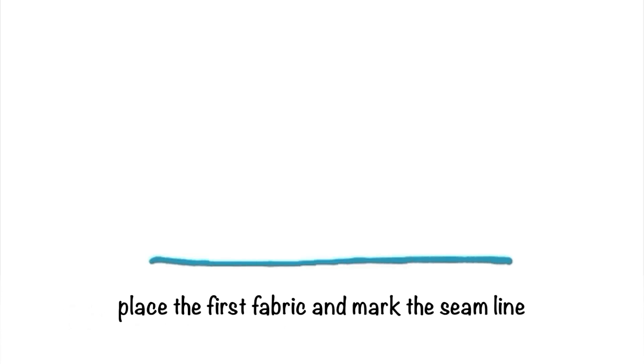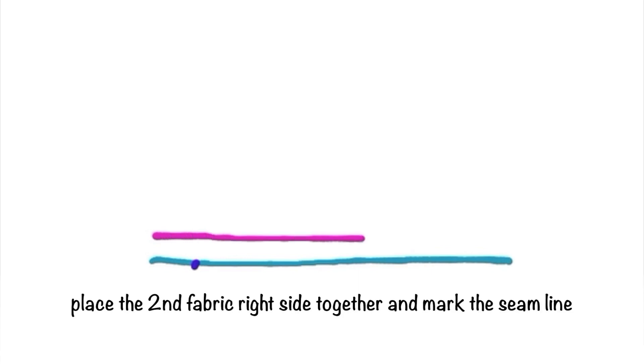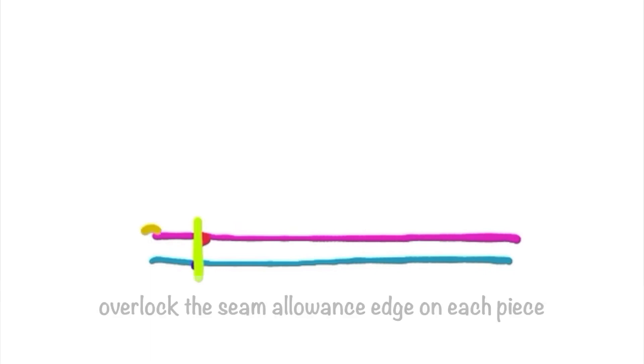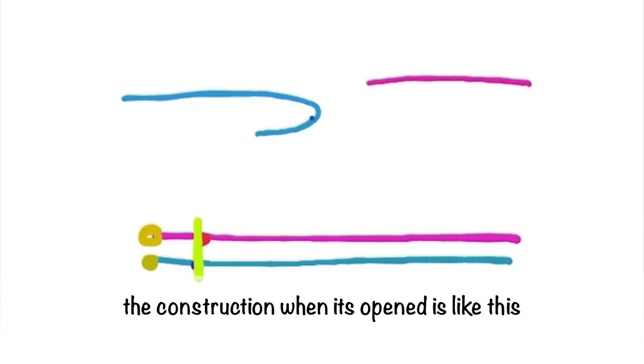For the construction: place the first fabric and mark the seam line. Place the second fabric right sides together and mark the seam line. Sew the stitch to the seam line, then overlock the seam allowance on each piece separately. This is how the construction looks when it is open.